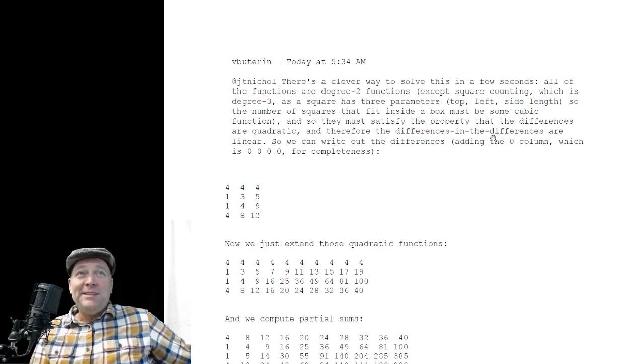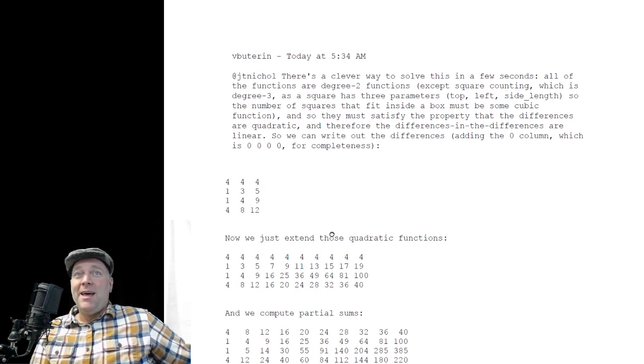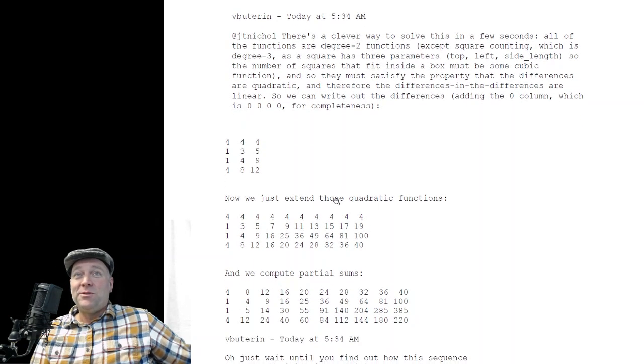And, therefore, the differences in the differences are linear. So we can write out the differences, adding the 0 column, which is 0, 0, 0, 0, for completeness. And then he extends the quadratic functions.